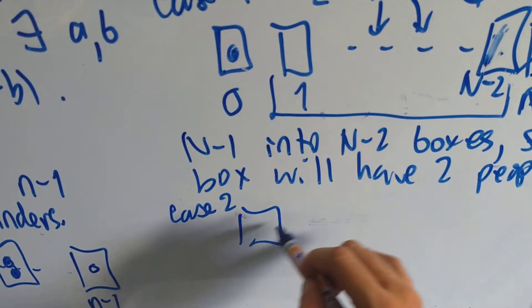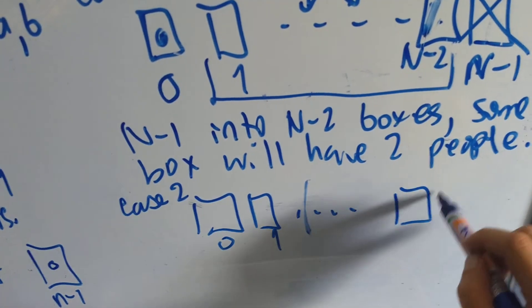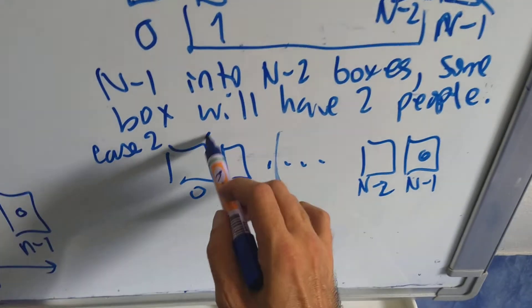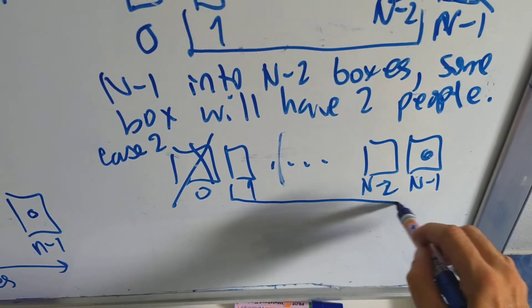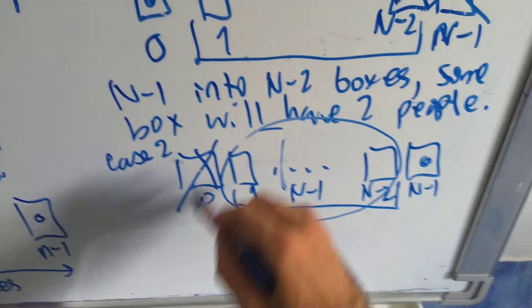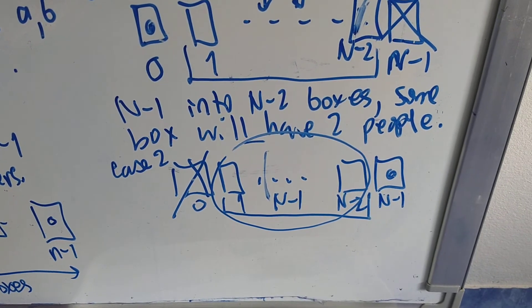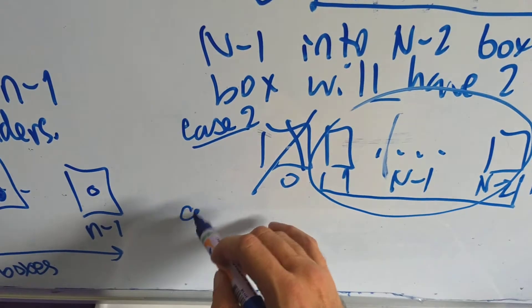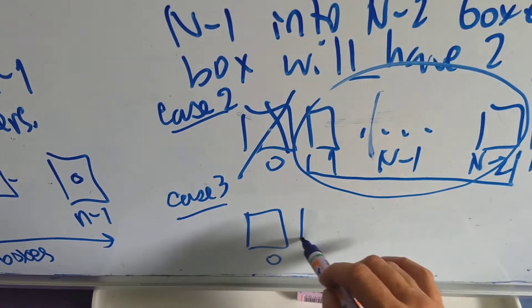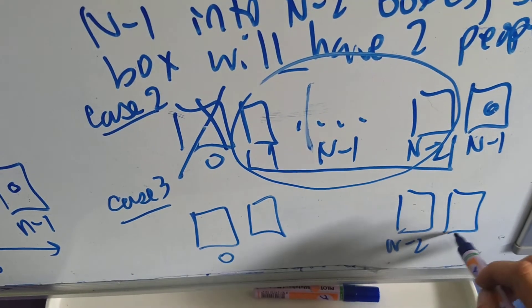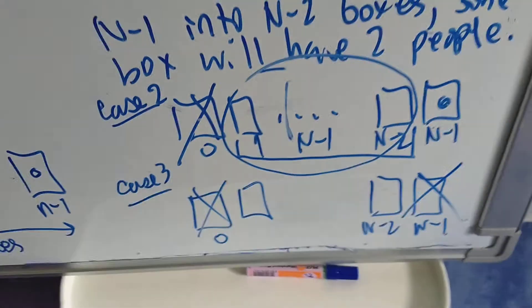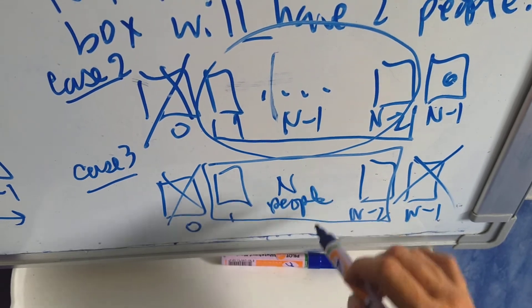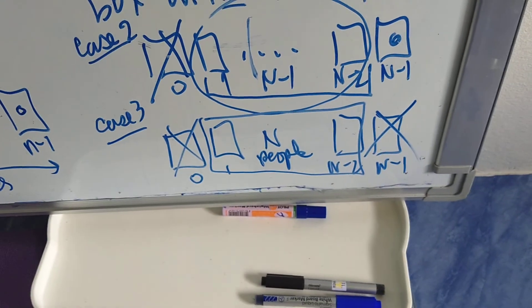Case 2: someone knows everyone — box n minus 1 is occupied. Then box 0 is impossible for the same reason, so I have the same situation: n minus 1 people into n minus 2 boxes, and some box must contain two people. Case 3: neither box 0 nor box n minus 1 is occupied. Then I must distribute n people among n minus 2 boxes — from 1 up to n minus 2 — and of course some box will contain two people.